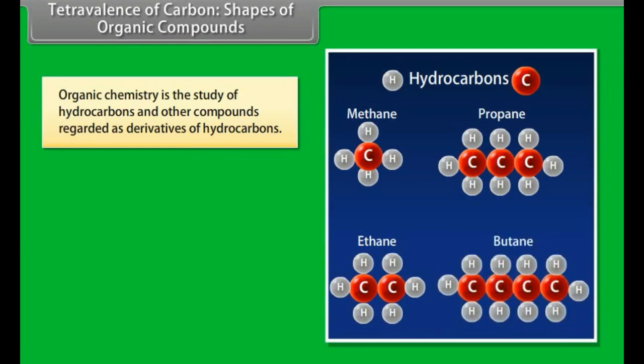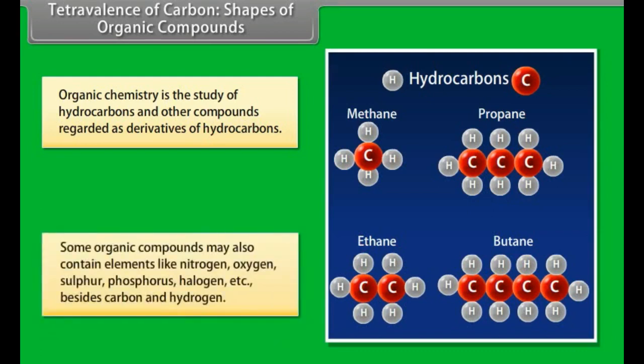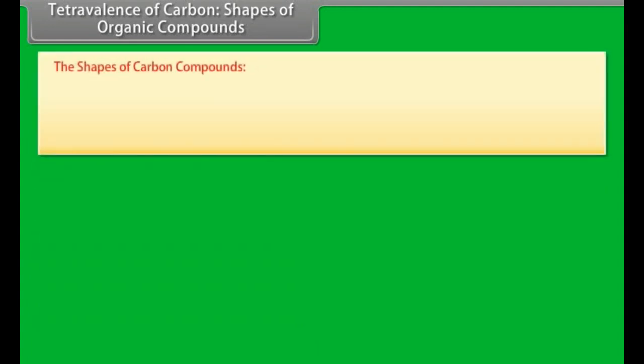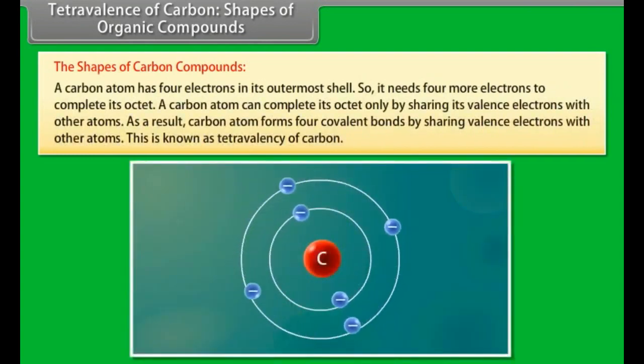Tetravalence of carbon and shapes of organic compounds. Organic chemistry is the study of hydrocarbons and other compounds regarded as derivatives of hydrocarbons. Some organic compounds may also contain elements like nitrogen, oxygen, sulfur, phosphorus, halogen, etc., besides carbon and hydrogen. The shapes of carbon compounds: a carbon atom has 4 electrons in its outermost shell.